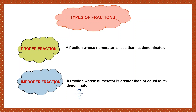Let's take another example. Suppose I take 12 by 7. Here also the numerator is greater than the denominator, so this is an improper fraction. Now, there is another part that says greater than or equal to. If I take a fraction 9 by 9, can you see that the numerator and the denominator are equal? Such a fraction is also called an improper fraction.